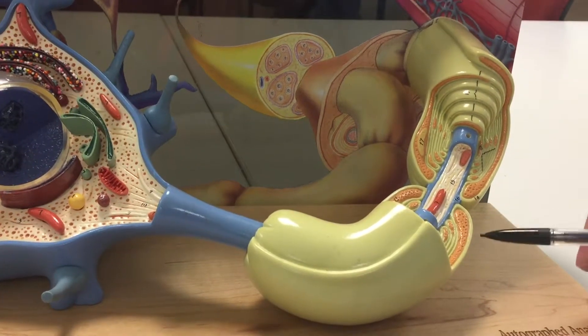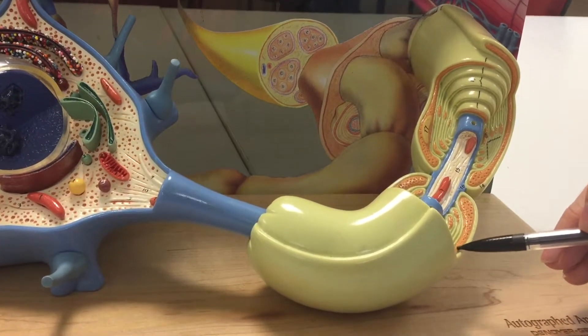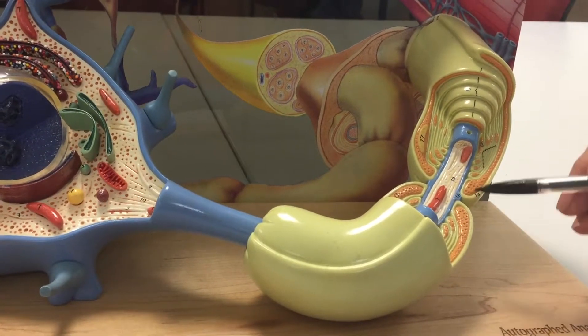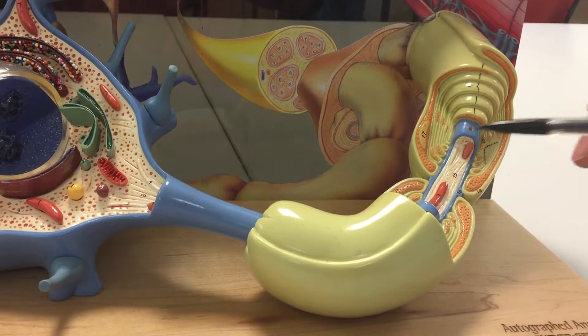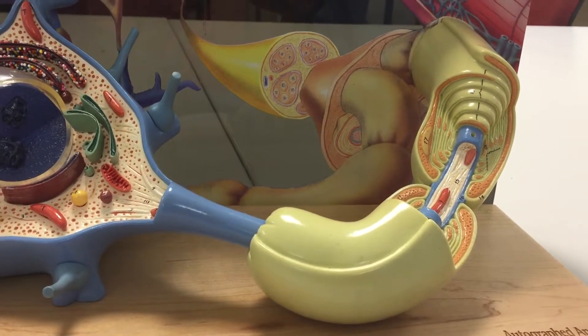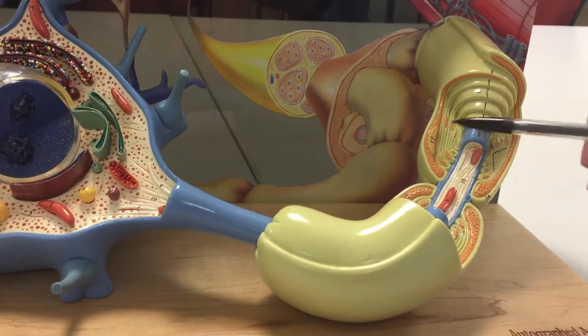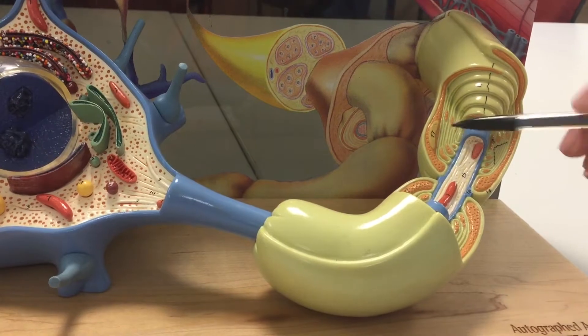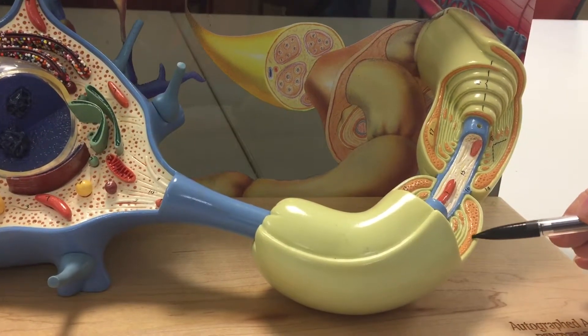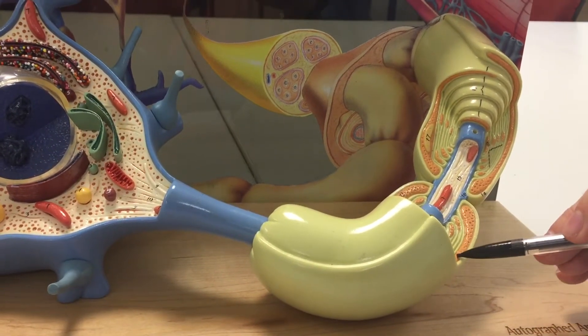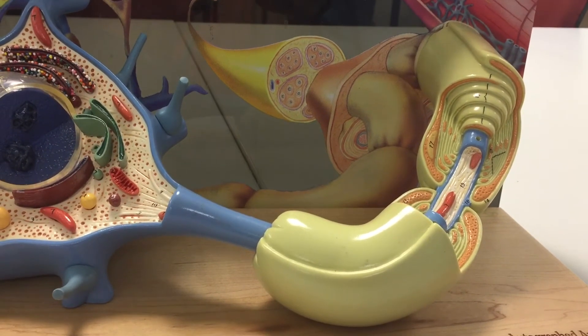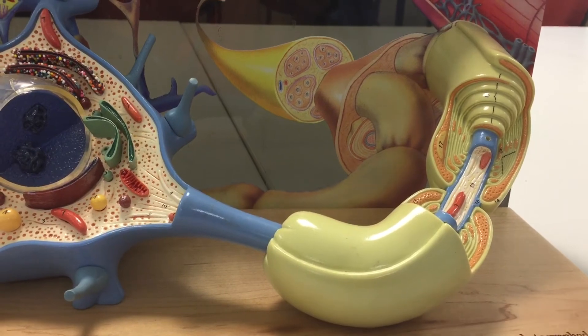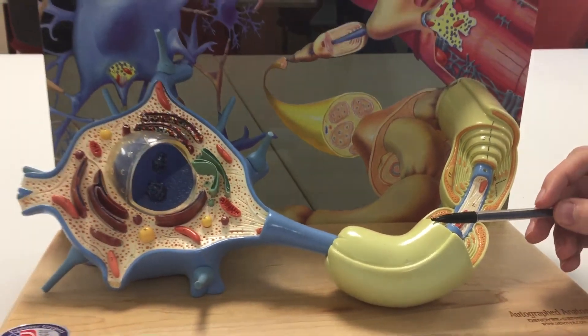And the last structure that you're responsible for, this orange material here and here, that's the outer layer of the myelin sheath. It contains cytoplasm, as well as the nucleus of that Schwann cell. That is called the neurolemma and it's responsible for axon regeneration if damage occurs to that axon. And those are the parts of the neuron that you're responsible for.